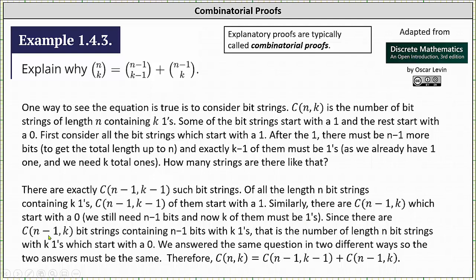Since there are N minus one choose K bit strings containing N minus one bits with K ones, that is the number of N bit strings with K ones which start with a zero.